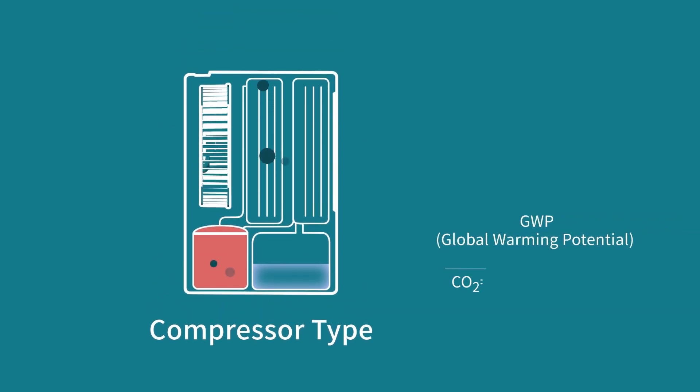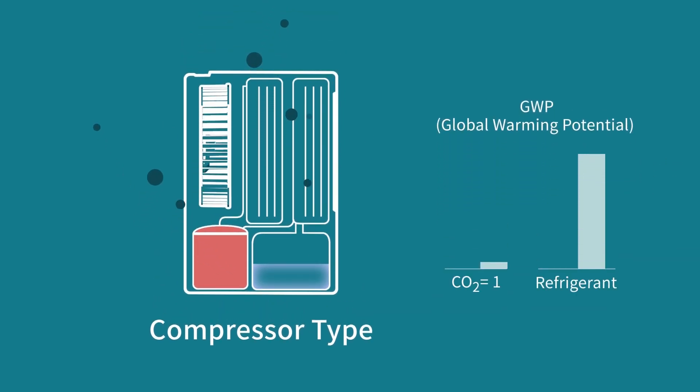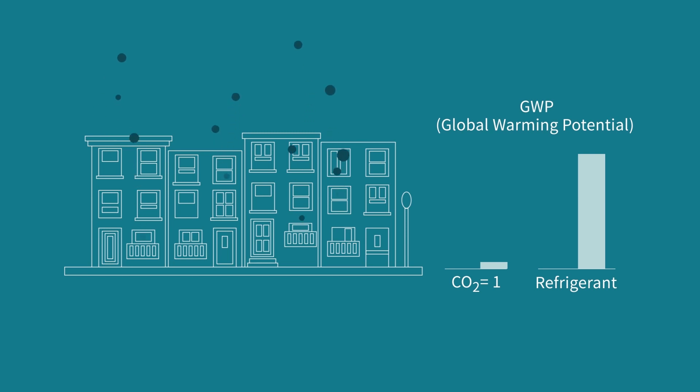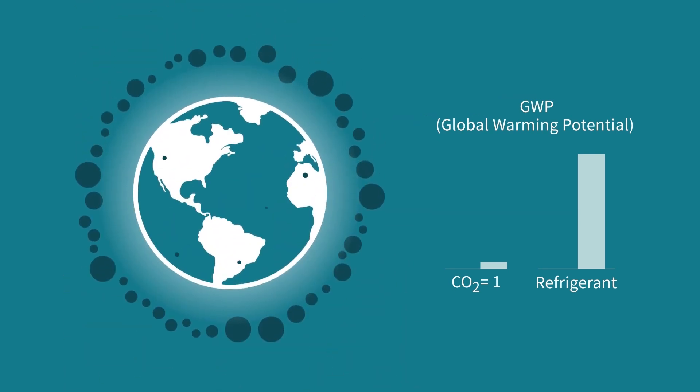Refrigerant is considered a GWP gas, and as one of the major greenhouse gases, it traps more heat in the atmosphere than carbon dioxide.